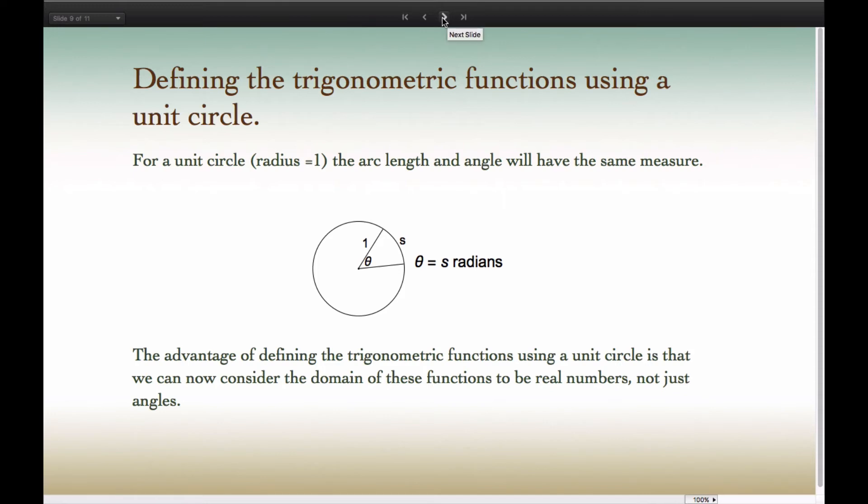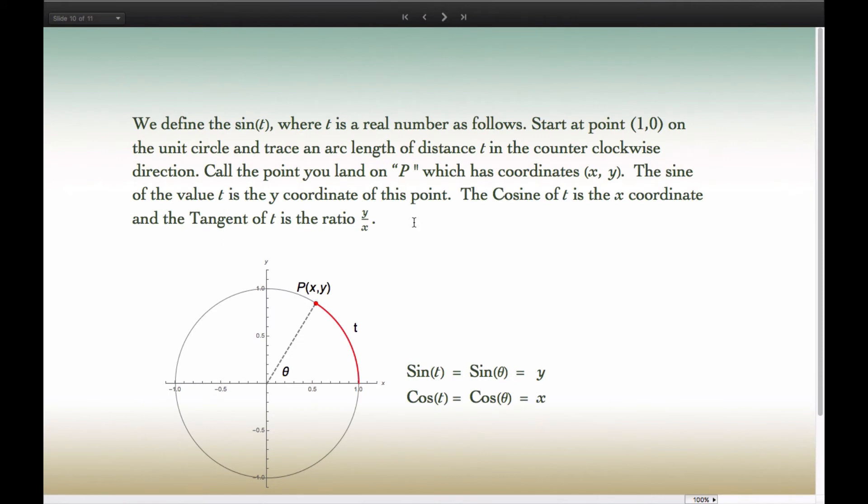We define the trigonometric functions using a unit circle as follows. First, we might mention that a unit circle, one whose radius is 1, has this relationship between an arc length and the angle theta. Since the radius is equal to 1, S will be identical in measure to theta. Now, the advantage of defining trigonometric functions using a unit circle is that now we can consider the domain of these functions to be real numbers, not just angles. Notice how we do this.